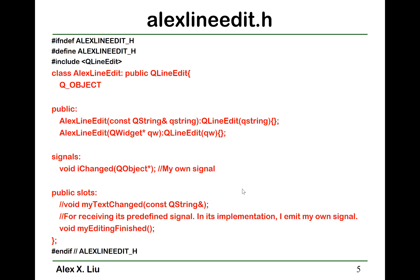Now let's take a look at how to achieve this. We still need to have the subclasses. In the subclass — for example, line edit — we need to publicly inherit from QLineEdit. It also needs to have the Q_OBJECT macro, and the constructors are the same as before: we basically pass to them the base class constructor.